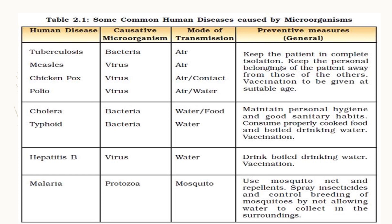Cholera and typhoid are both caused by bacteria and transmitted through contaminated food and water. Preventive measures include maintaining personal hygiene and good sanitary habits, consuming properly cooked food, and boiling drinking water. Vaccination is also available. Hepatitis B is caused by a virus and transmitted through water; prevention includes drinking boiled water and vaccination.